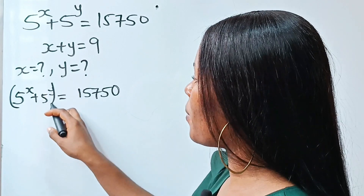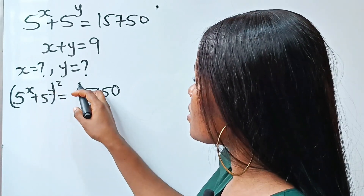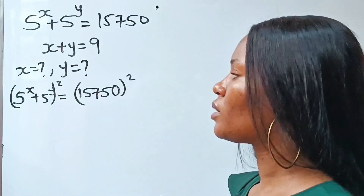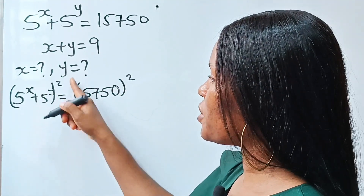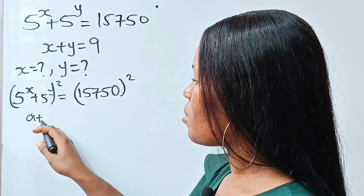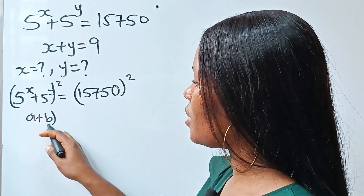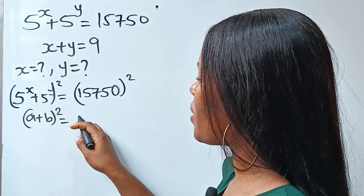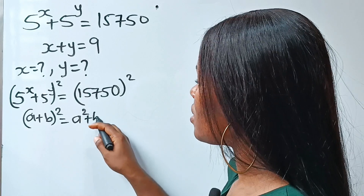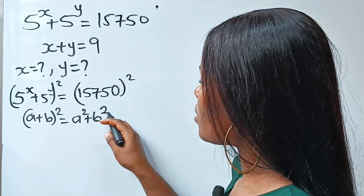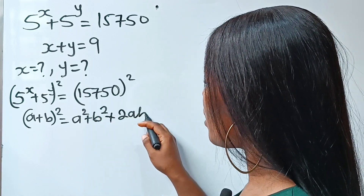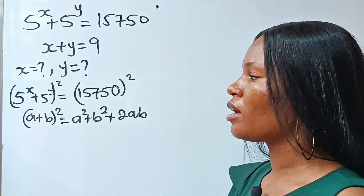Now let's square both sides of this equation. We have a plus b squared. In algebra, a plus b squared is the same thing as a squared plus b squared plus 2ab.